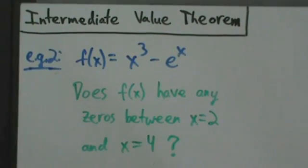Okay, so here's example two with the Intermediate Value Theorem. f(x) equals x cubed minus e to the x, and we want to know does f(x) have any zeros between x equals 2 and x equals 4?